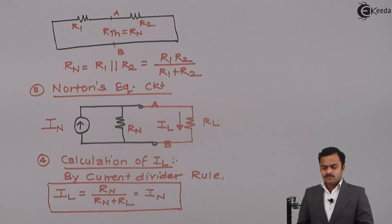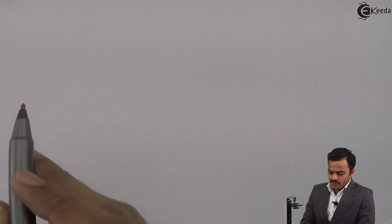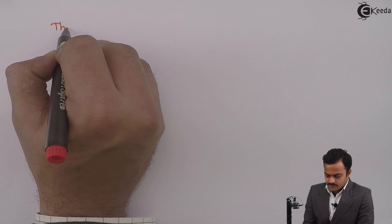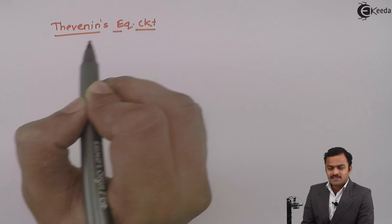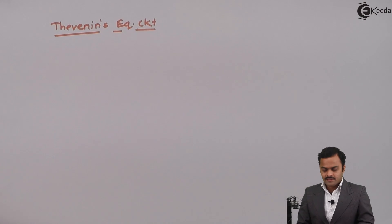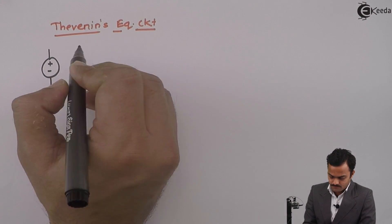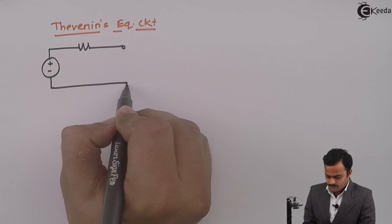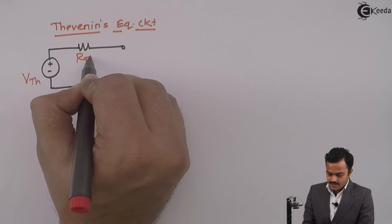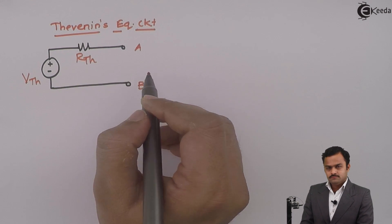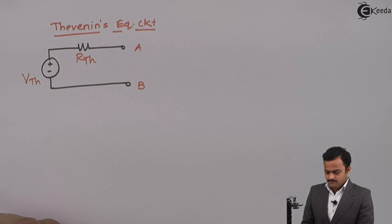One more thing to develop is the relationship between Thevenin's and Norton's equivalent circuits. Thevenin's equivalent circuit has a voltage source Vth with series resistance Rth between terminals A and B — essentially a practical voltage source, since the resistance can be considered its internal resistance.